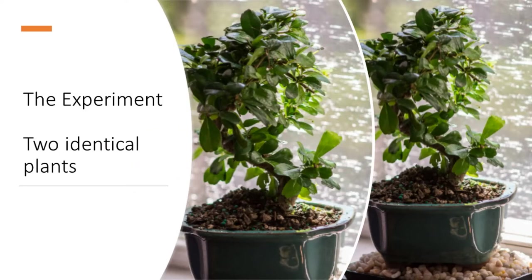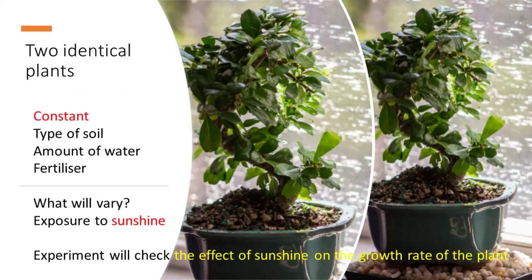Let us now look at an experiment. The researcher, a biologist, starts with two identical plants. What would be kept constant? For simplicity, let us take three variables: type of soil, amount of water, and fertilizer — these three factors will be the same for both plots. One plant is kept in the sunshine and the other away from sunshine. What will vary? The exposure to sunshine. The experiment is designed to check the effect of sunshine on the growth rate of the plant.